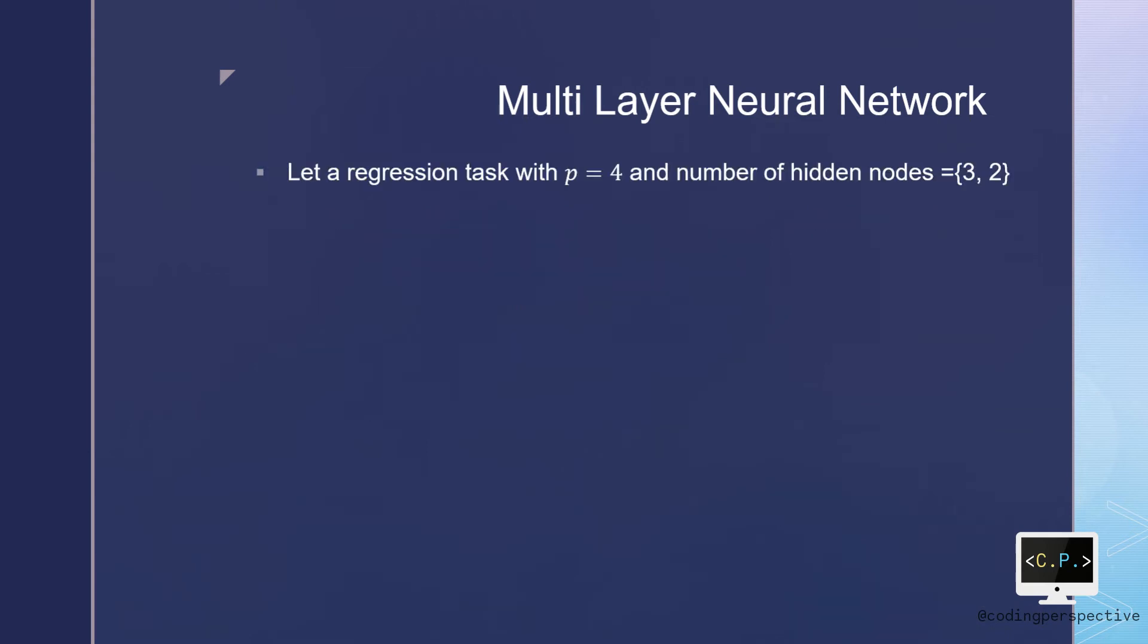Let us have a look at an example of multilayer neural networks with two hidden layers. To mimic the process of making predictions on a two-layer neural network structure, we start with input layers as usual. Again, we assume that we have four features in our dataset.